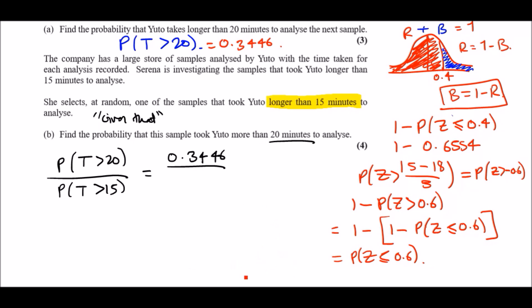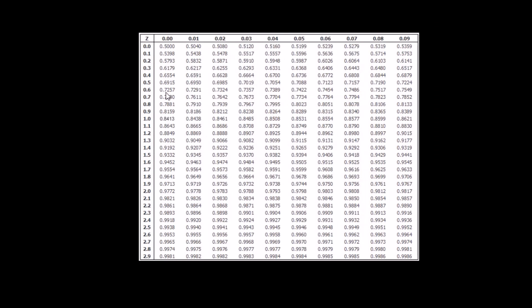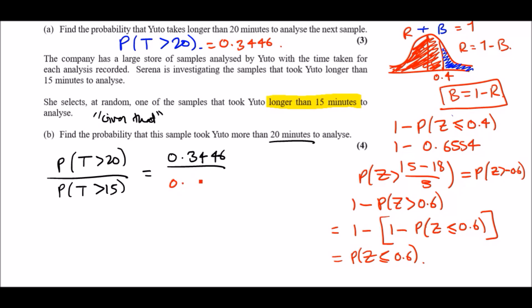Looking up 0.6 in the Z-table gives 0.7257. So P(T > 15) = 0.7257. The conditional probability P(T > 20 | T > 15) = P(T > 20) / P(T > 15) = 0.3446 / 0.7257, which gives approximately 0.4749.